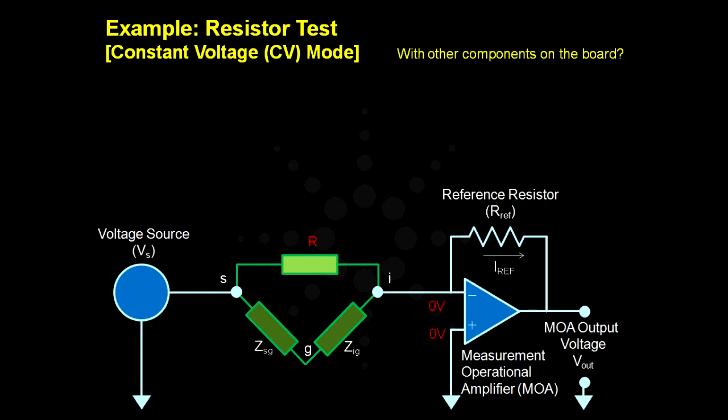Because of this parallel path, IREF becomes a combination of current flowing through the DUT and the parallel path represented by IRX and IZIG in the diagram. This results in an error in the calculated value of the resistor. Something needs to be done to eliminate IZIG so that IRX becomes equal to IREF, thus making the calculations for the resistance correct again.